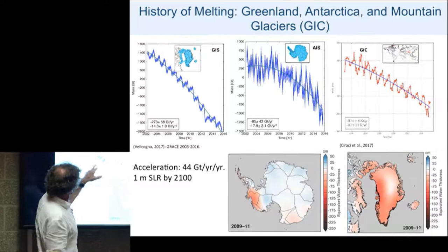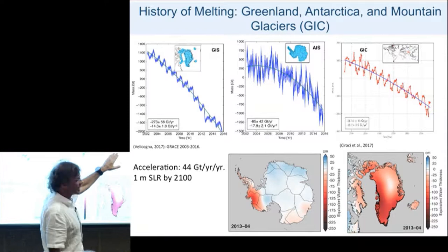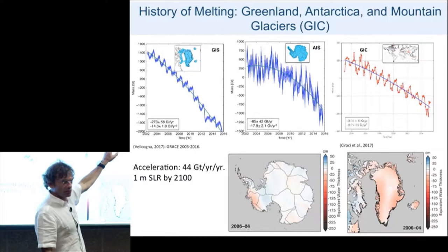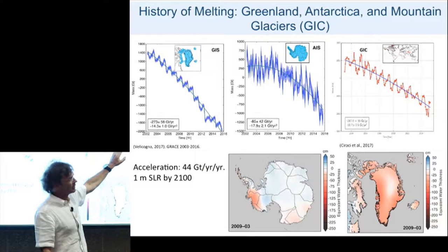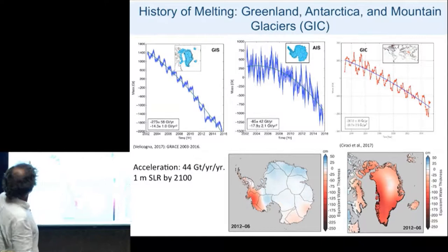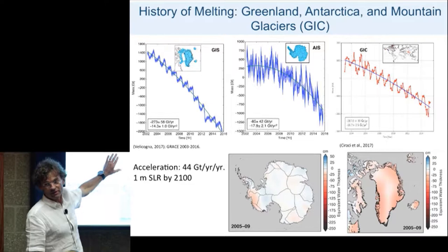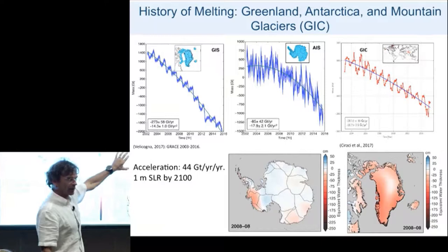With GRACE we can also measure all mountain glaciers and ice caps in the world — hundreds of thousands of glaciers impossible to monitor on the ground. These glaciers also contribute to sea level, almost equal to Greenland. But the ice sheets are already ahead. There's also a little curvature — the increase in mass loss of the glaciers. They add up to the balance.